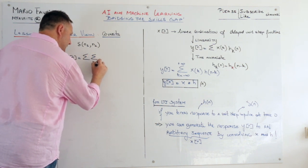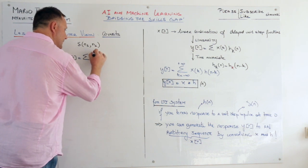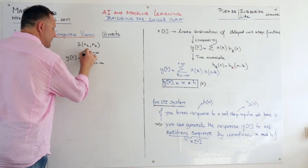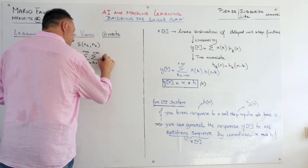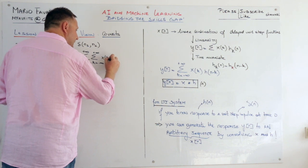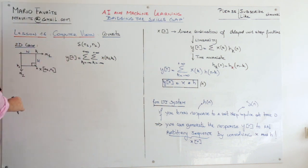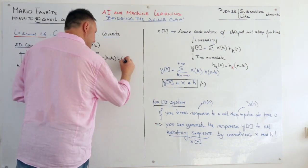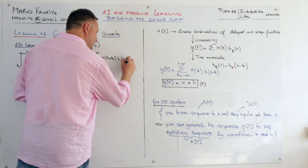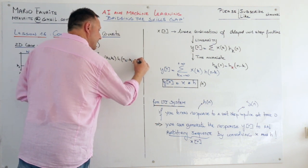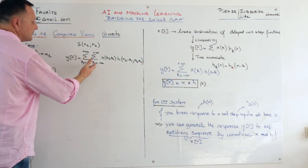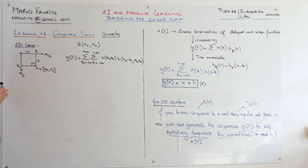So first k1 equals minus infinity plus infinity and then k2 equals minus infinity plus infinity. And then we have x k1, k2 times h of n1 minus k1 and then n2 minus k2. And that's it. That's your convolution sum in the 2D case.